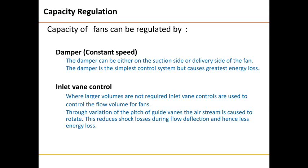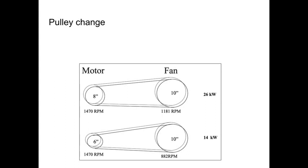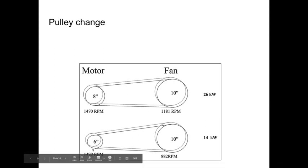Capacity regulation involves regulating the flow. The first method is a damper, either on the suction or delivery side — it is the simplest control system but causes the greatest energy loss. The second is inlet vane control, used where large volumes are not required. A third method is pulley change: a fan of 10-inch size with an 8-inch pulley at 1470 RPM gives 1181 RPM and consumes 26 kilowatts. Changing to a 6-inch pulley reduces fan speed to 882 RPM and saves 12 kilowatts.